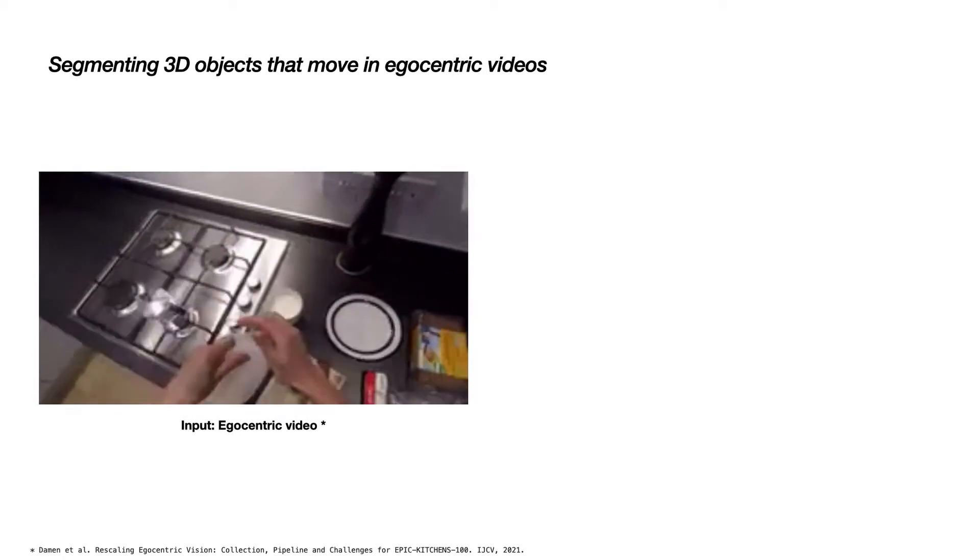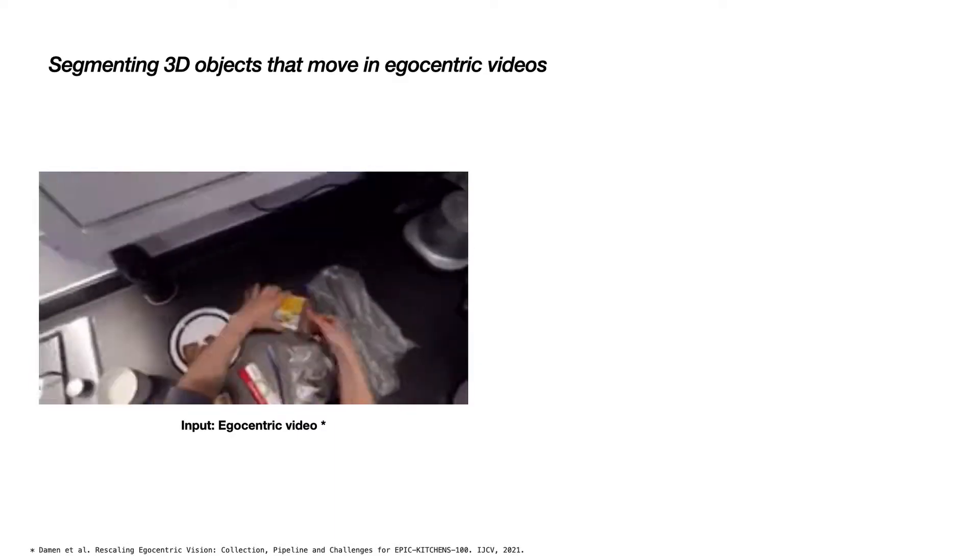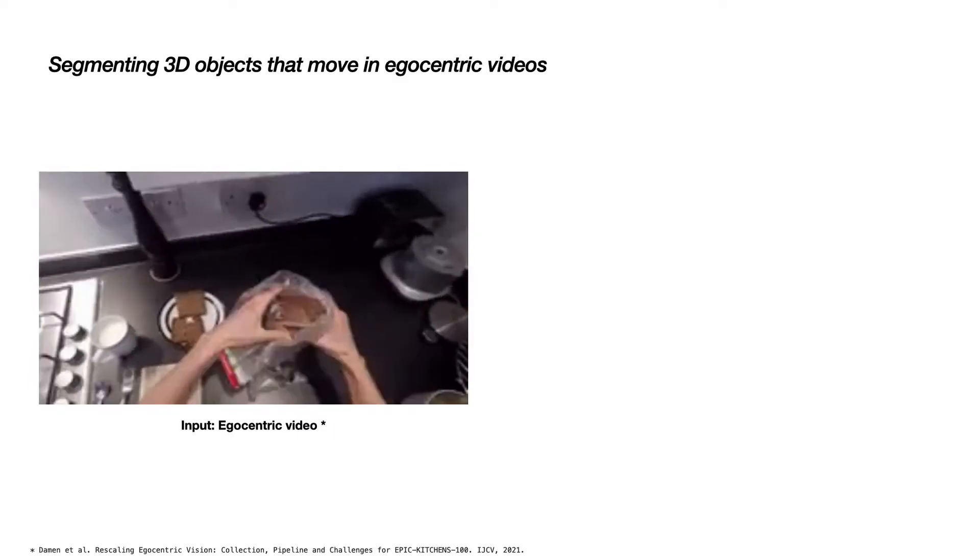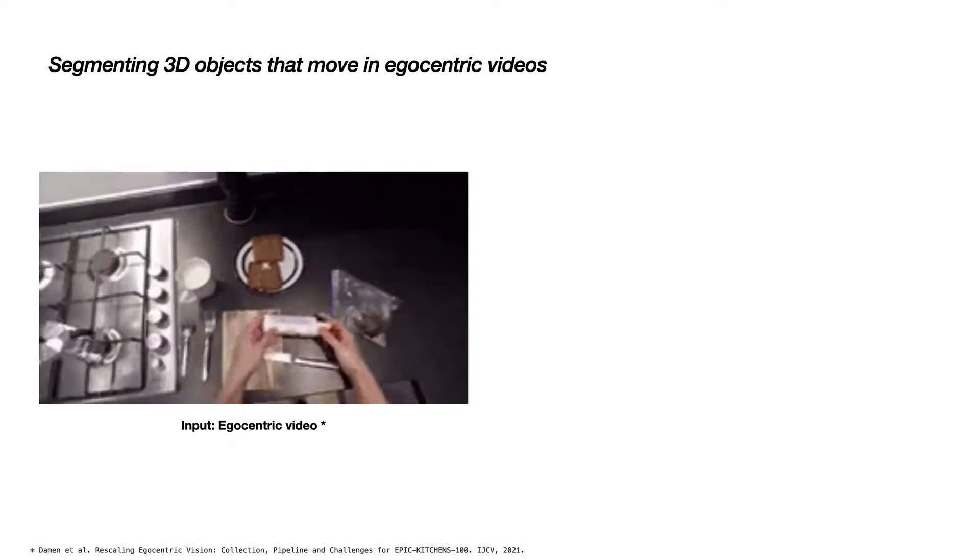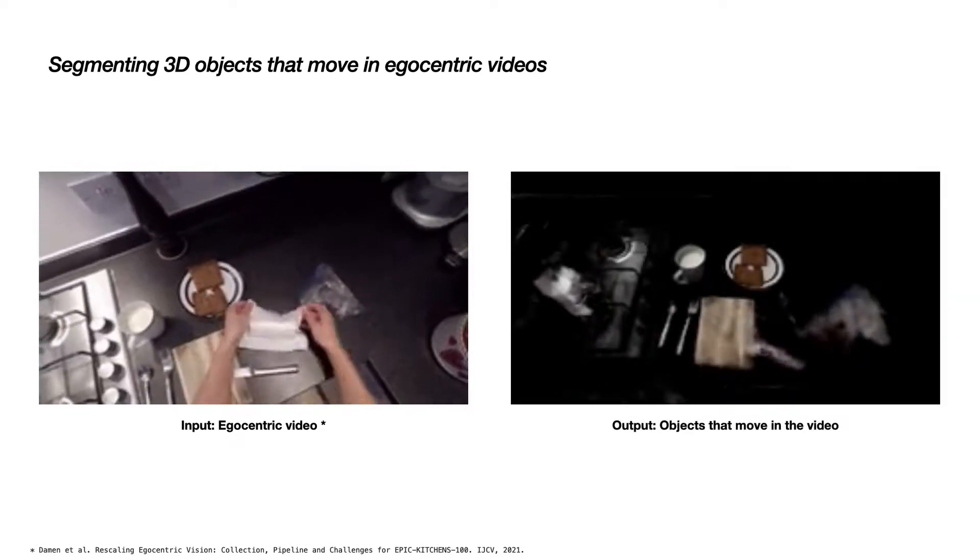An example of such a video is shown here. This is a short clip from the APKitchens dataset. Given this kind of raw data, we would like to discover and visualize all objects that were moved during the entire video.